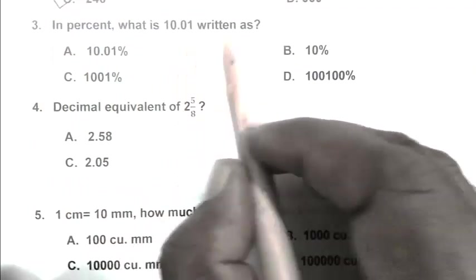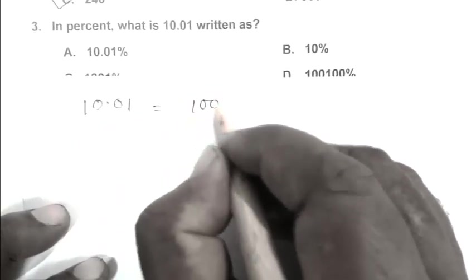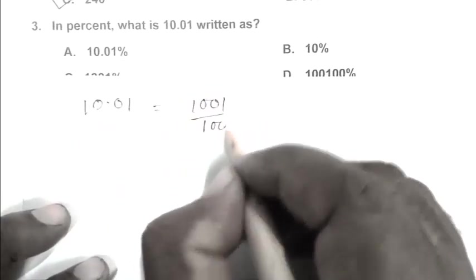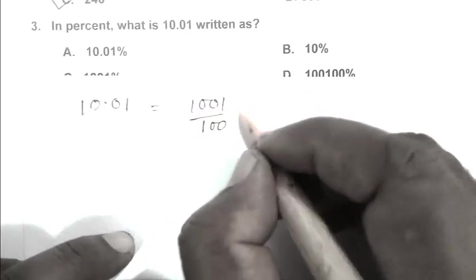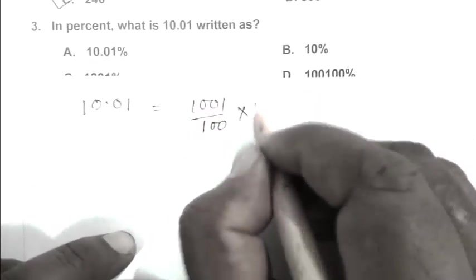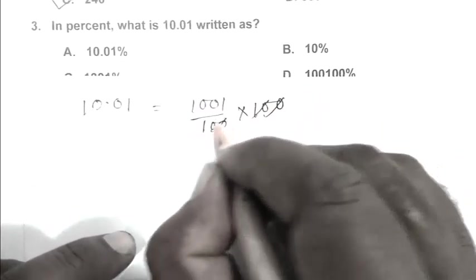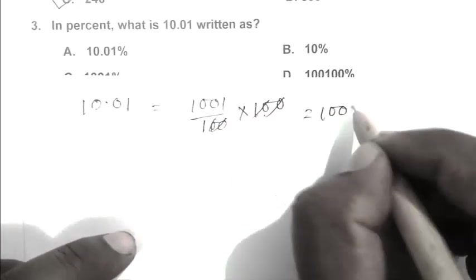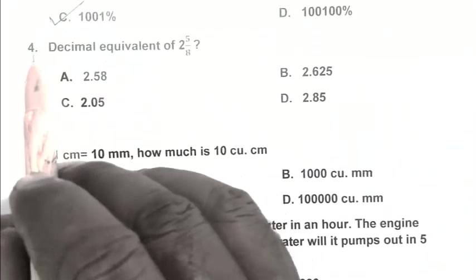Question number 3. In percent, what is 10.01 written as? So we can write 10.01, eliminating the decimal point we get 1001 upon 100. If we convert it into percentage we multiply by 100. So that is 1001 percent. C is the right answer.